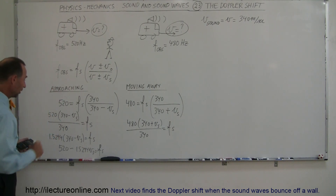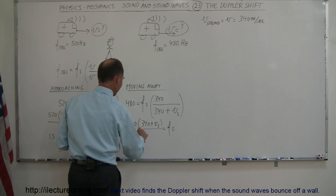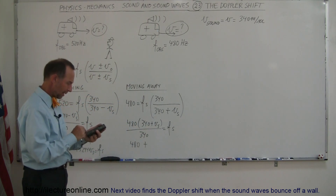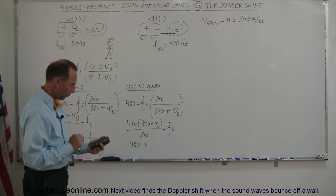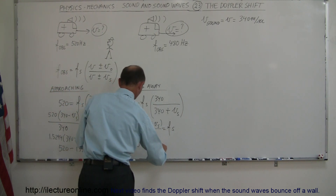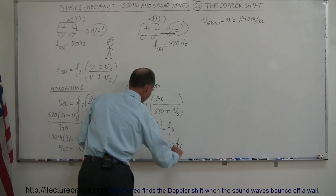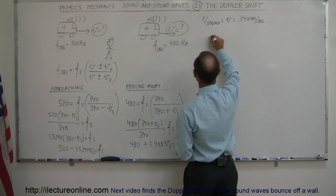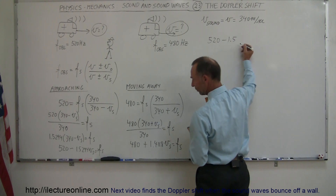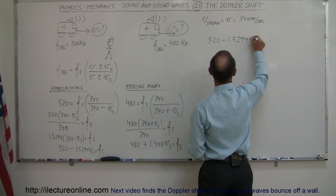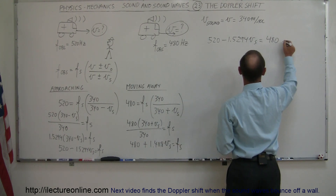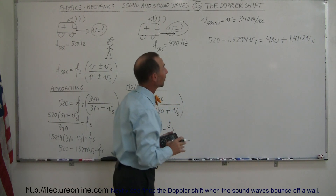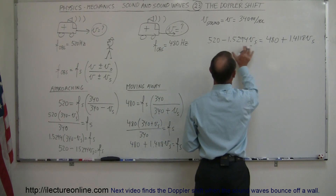For the second equation, we multiply 480 times (340 plus v_source) divided by 340, which also equals the frequency of the source. Simplifying: 480 divided by 340 equals approximately 1.4118. So we get 480 plus 1.4118 times the velocity of the source equals the frequency of the source. Now we set these two expressions equal to each other.